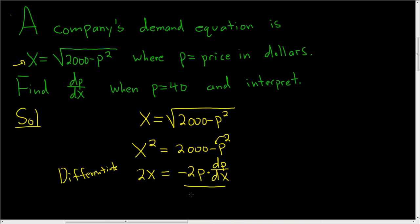Divide both sides by negative 2p. And that leaves us with dp/dx is equal to, the twos cancel, so we just get negative x over p.